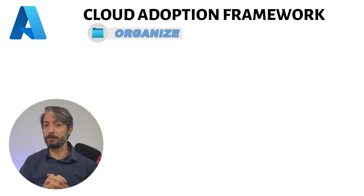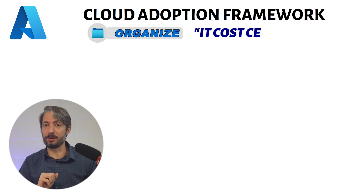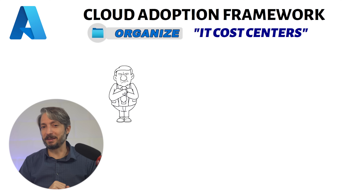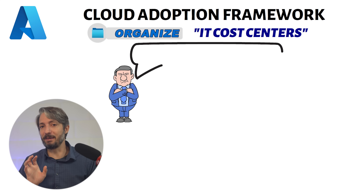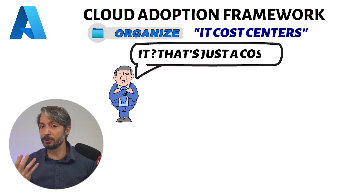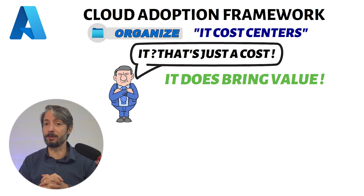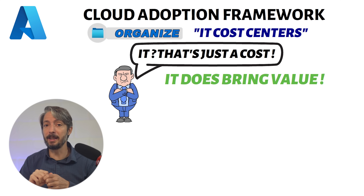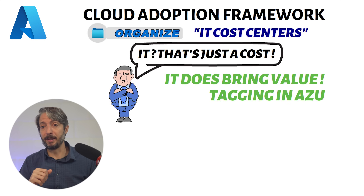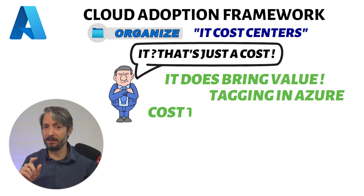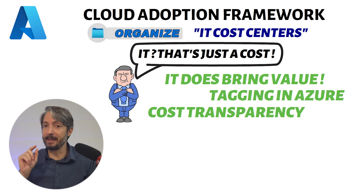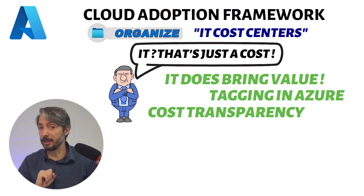Moving on to the Organize pillar with the anti-pattern IT cost centers. Most of us have felt this struggle where the company treats the IT department just as a cost and doesn't value what it brings. Simple steps to avoid this: make sure business units are paying for the IT resources they use in the cloud — it's part of their business expense, and using tags in Azure is a great way to achieve this. Make sure you have cost transparency, because IT enables the business — it is not just a cost.